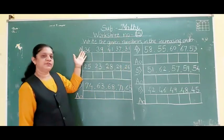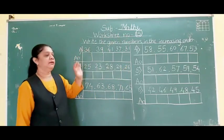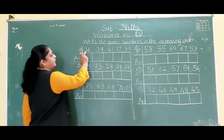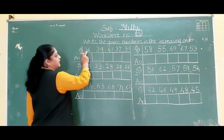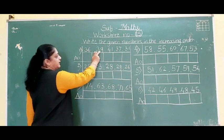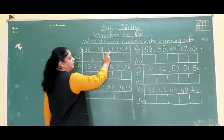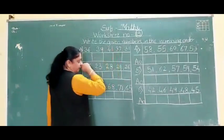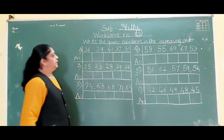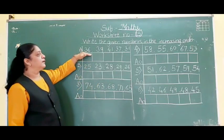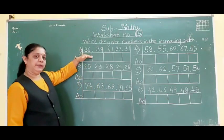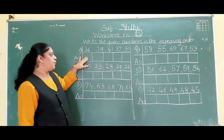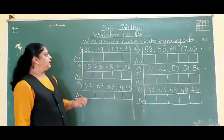Shall I begin? Yes. First example — read the numbers: 36, 39, 41, 37 and 31. Now, small to big. First, we will write the small numbers.